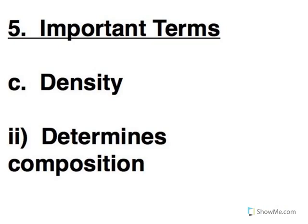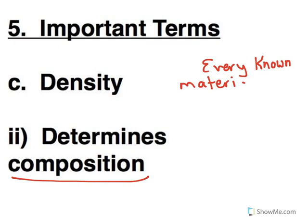Where density is going to come into play is when we are looking to determine the composition of an object, because every known material has a known density. So for example, iron has a very specific density.